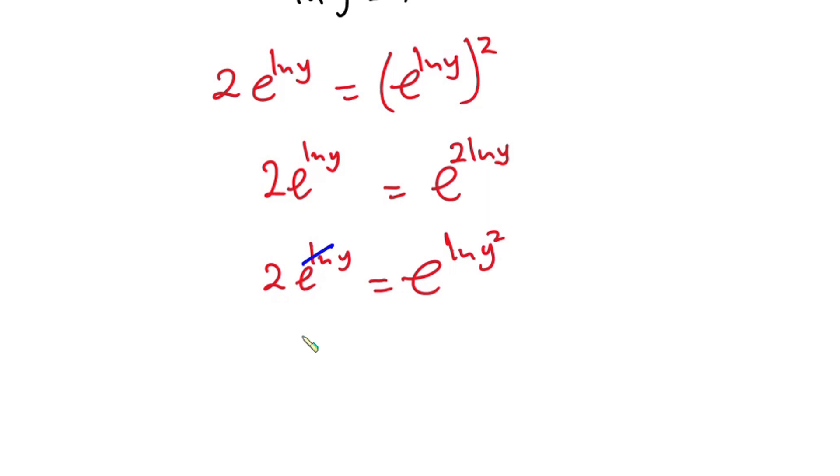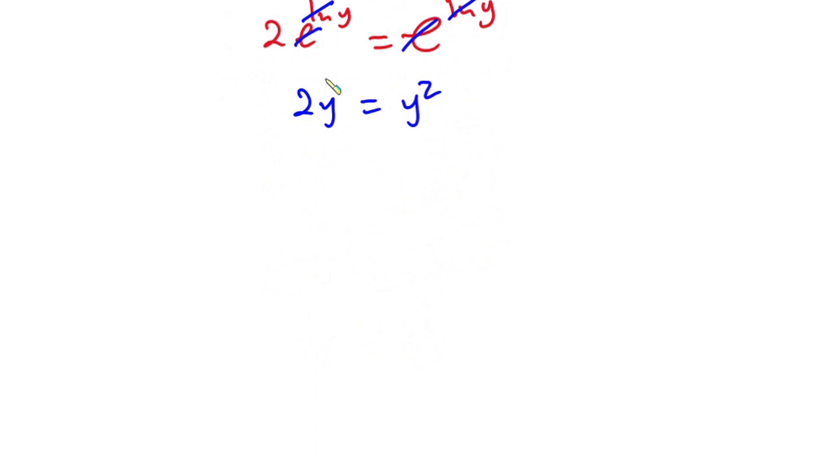Now straight away this one and this one do each other. So we have 2y over here and this is equal to this e and this one also go. So we have y to the second power over here.